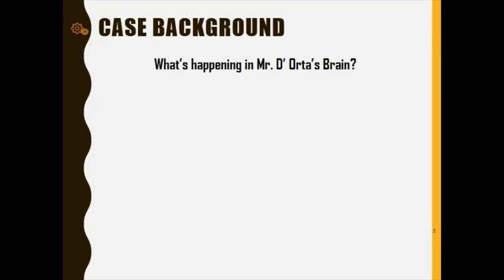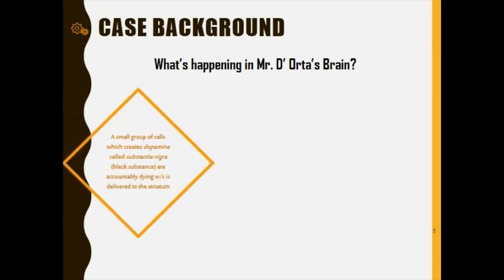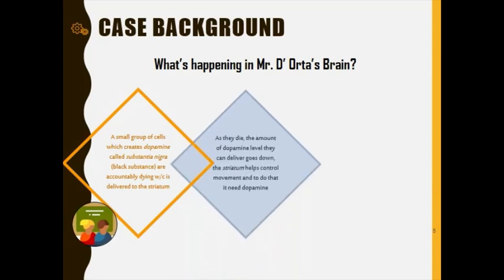What happened biologically in Mr. De Orta's brain? A small group of nerve cells called the substantia nigra — the 'black substance' — were dying. These neurons make a particular chemical called dopamine, which they deliver to another part of the brain known as the striatum. As the cells in the substantia nigra die, the amount of dopamine they deliver goes down.